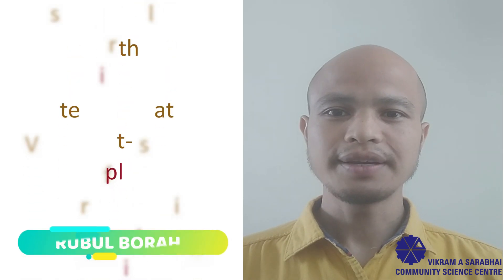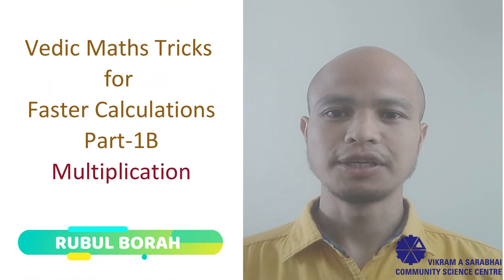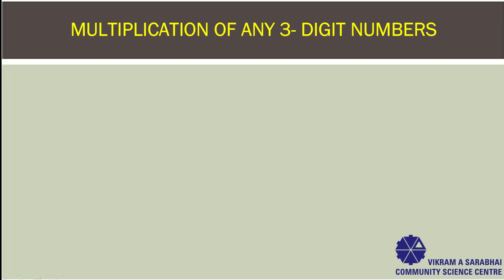Hi everyone! Here are a few poetic mathematical tricks that you can use to solve math problems in an easy and faster way. Let's go through it. Multiplication of any three-digit numbers. In this type of multiplication, numbers need to be close to a power of 10.